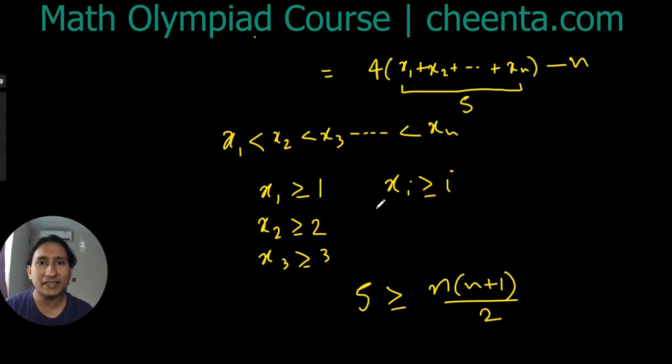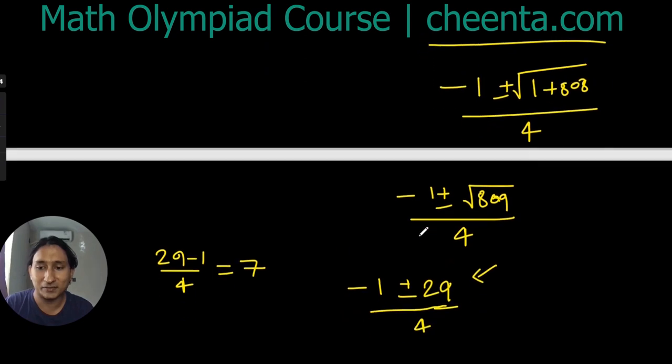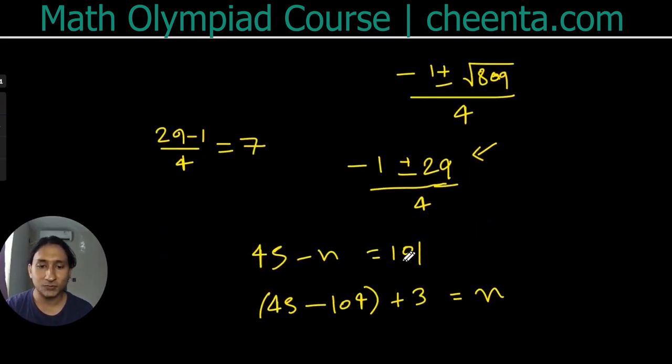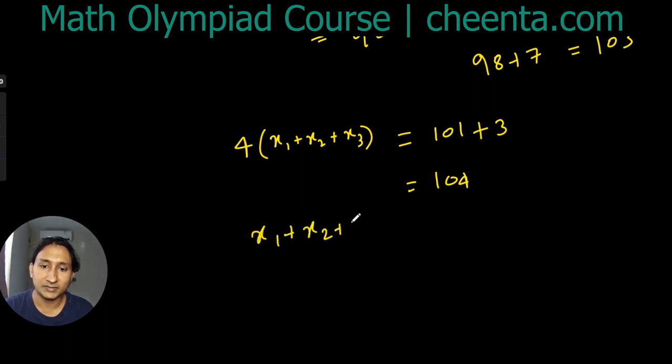Now we finally need to check if this really has a solution. We already know that if there is a solution, n has to be equal to 3. So if n = 3, we have 4(x₁ + x₂ + x₃) = 101 + 3 = 104. And if we divide that by 4, what do we get? x₁ + x₂ + x₃ = 26.